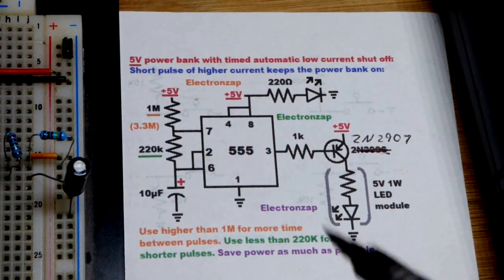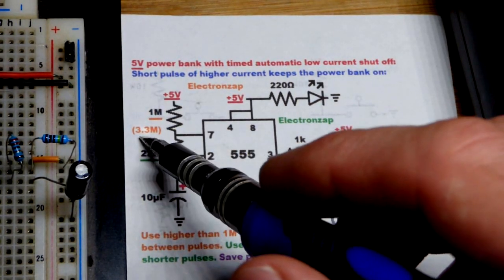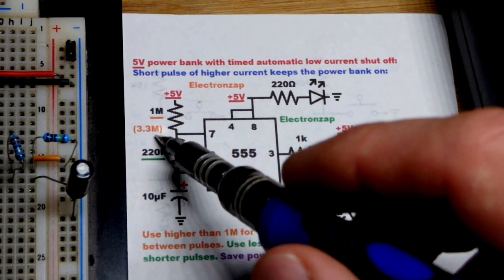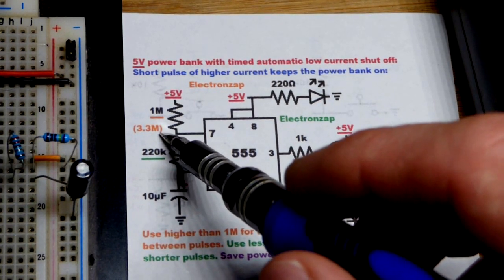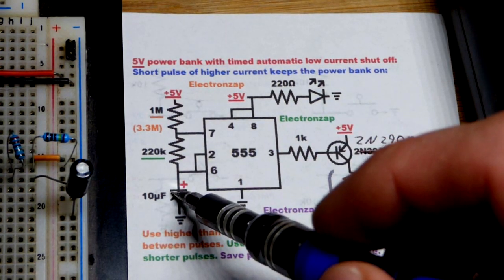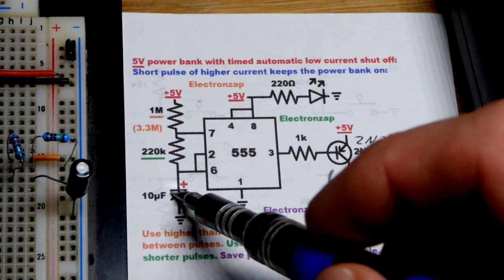We got the 555 as I said before. We don't have to use these values. I'm guessing because I made this a long time ago that this worked with 3.3 million ohms, so that would take the capacitor more than three times longer to charge.